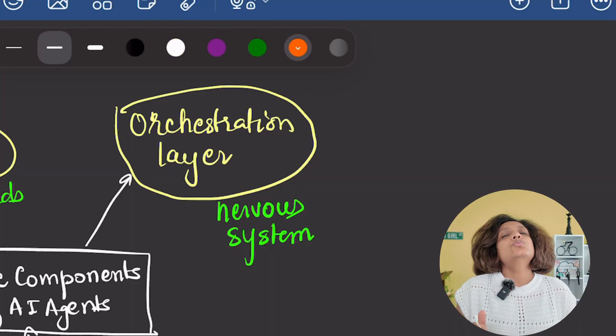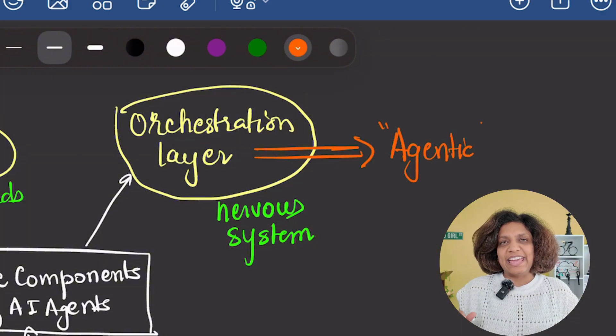This orchestration layer is what makes the system truly agentic, which means able to work autonomously towards a goal without human constantly intervening. Now, let's break down each component, starting with the language model, the brain of your agent.